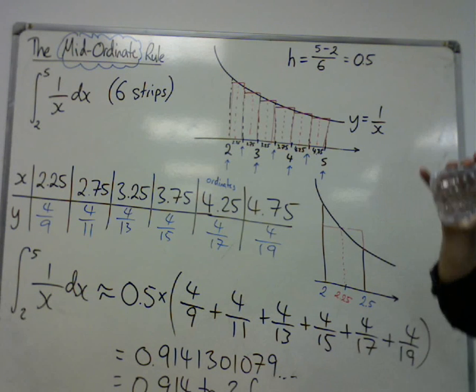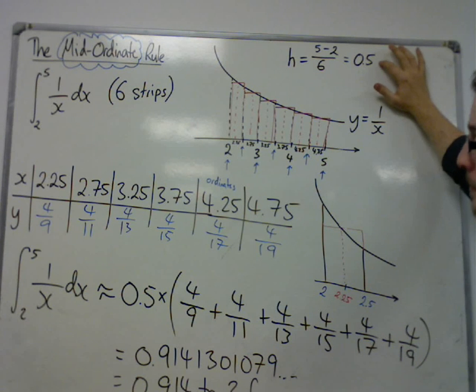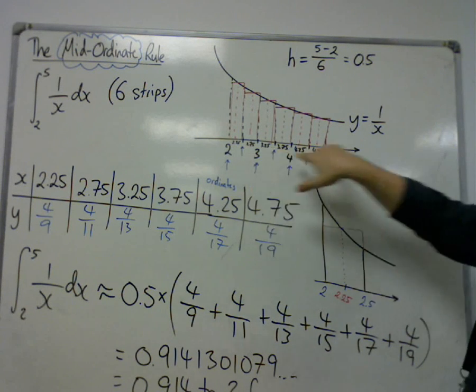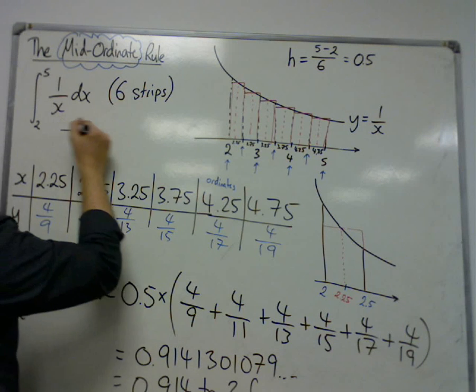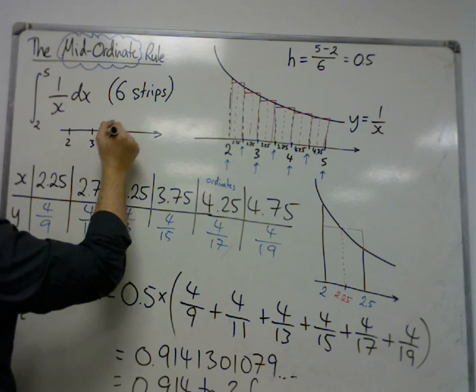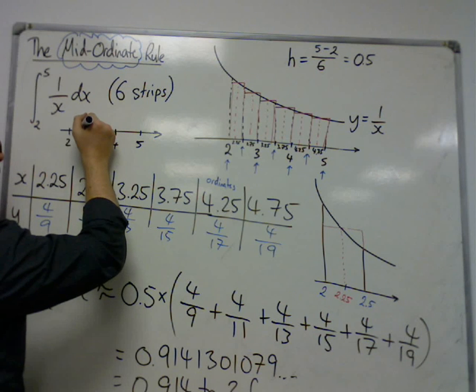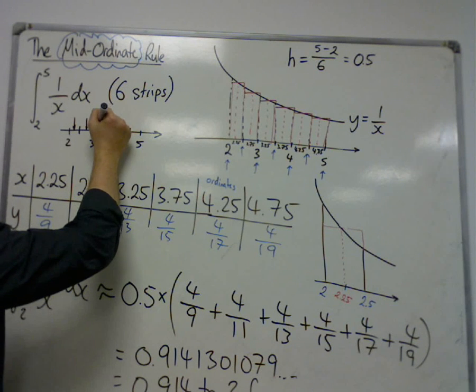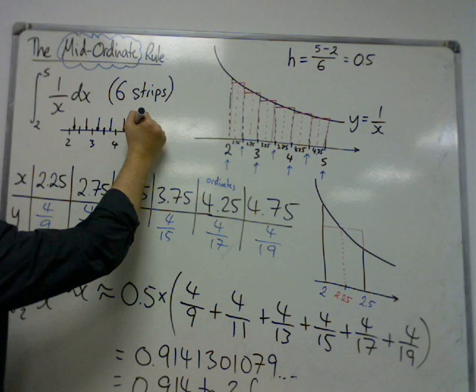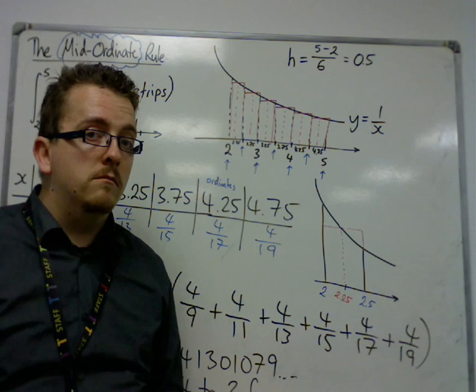What you need to make sure that you do is, first of all, work out the width of each strip. You might want to draw out on just a line. So in this case, I know it's going between two and five, so two, three, four, five. That would be three strips, so that would make it six strips. So I'm needing each of the mid-ordinates, and that would allow you to figure out what each of those mid-ordinates actually had to be.